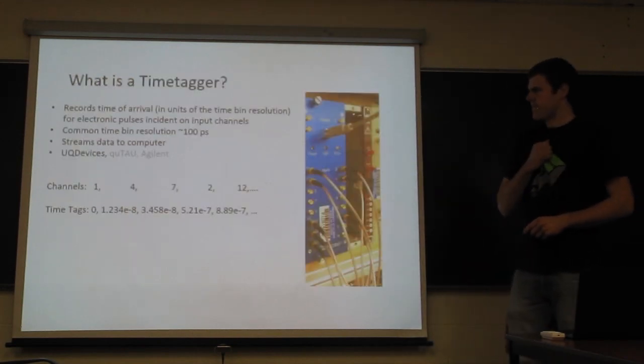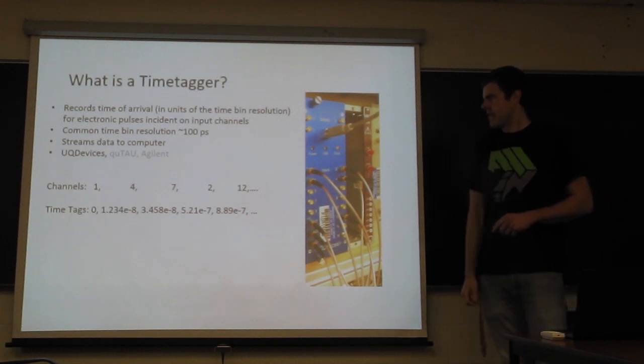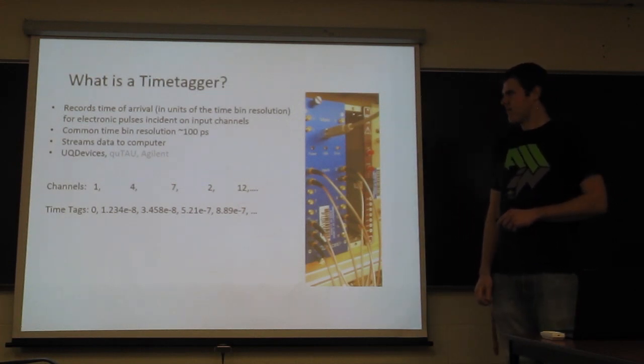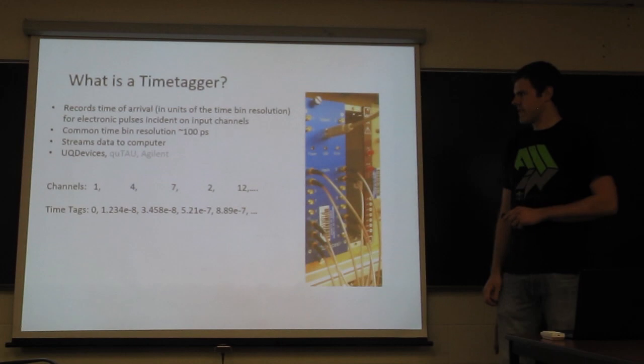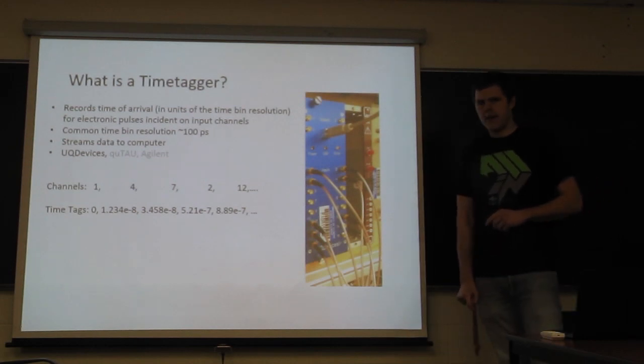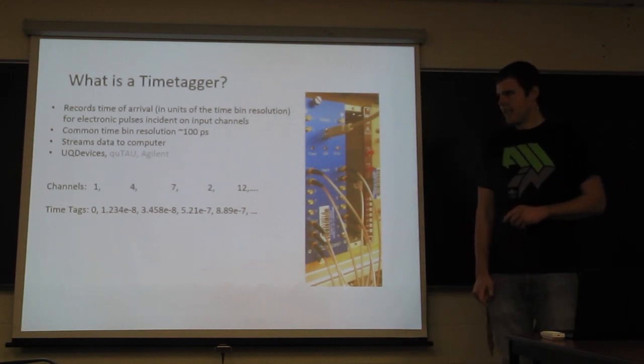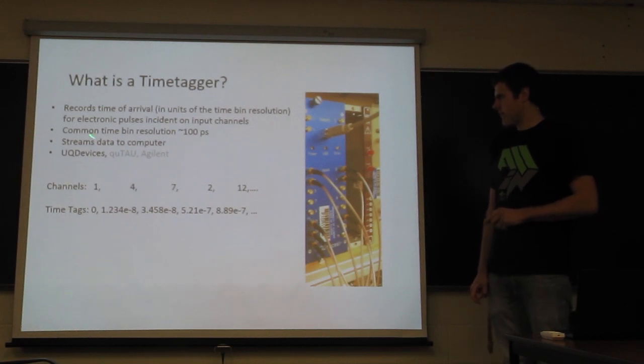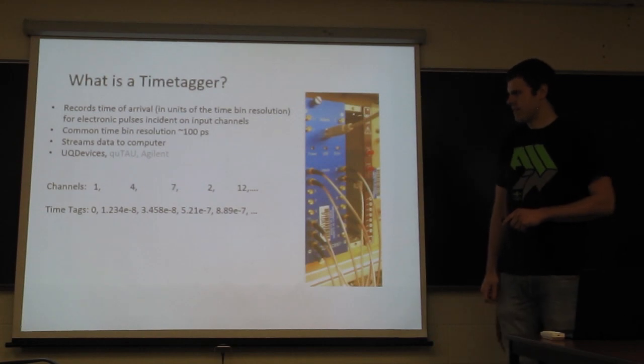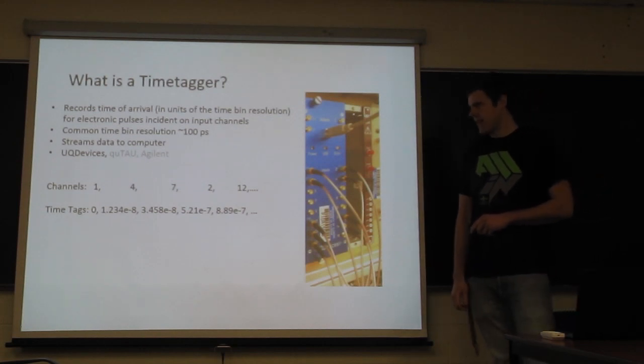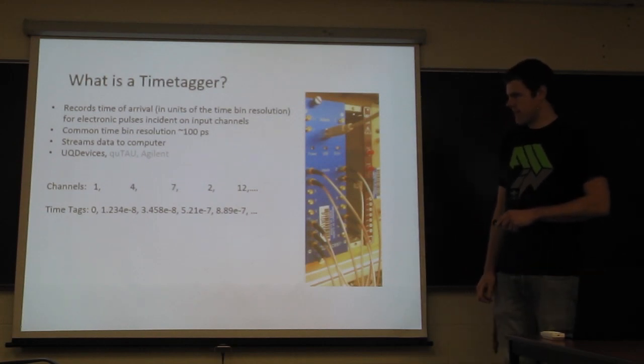So what is a time tagger? A time tagger is an electronic device that records the time arrival for inputs where the time arrival is recorded in the unit of the time bin. The time bin is usually about 100 picoseconds and then this data is streamed to a computer via USB. In our lab, we have several time taggers and we're going to focus on the UQ devices time tagger.